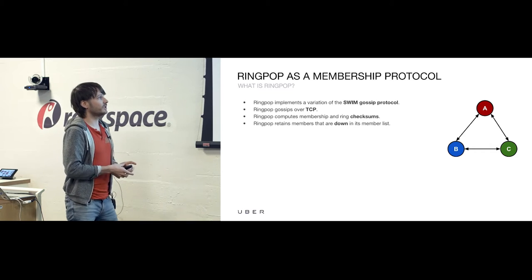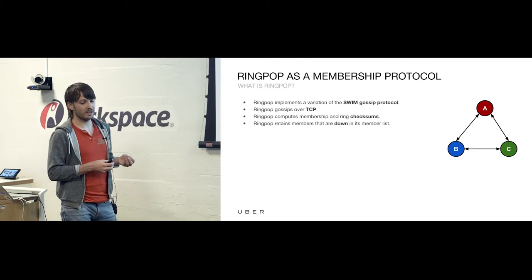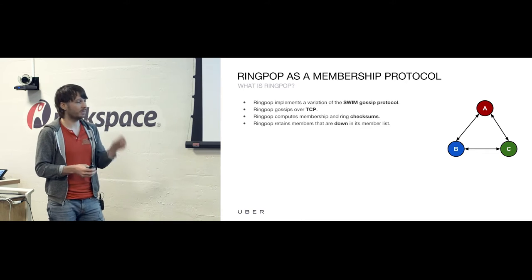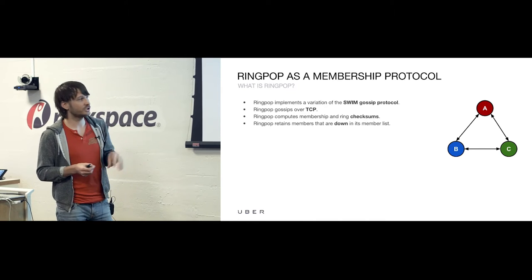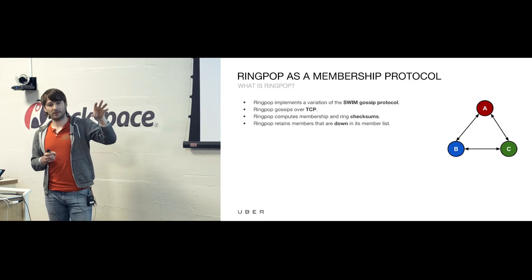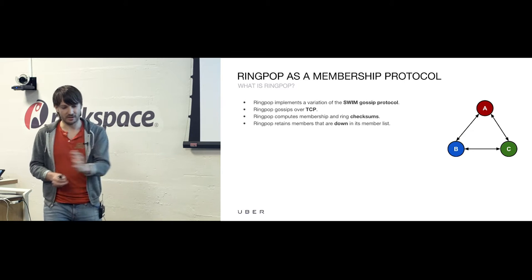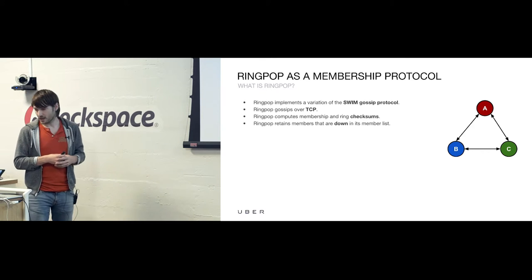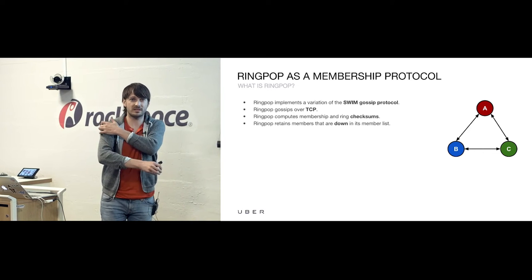If this were your application with three instances, they would have to find out about one another. The way they do that is by using the primitives of SWIM, which are ping and ping-req. A ping is exactly what it sounds like — members heartbeating but doing so in a random fashion. They choose a random member with every ping, eventually get to the full membership list, then rotate that list when they've reached a full round of pinging. So A is pinging B, B is pinging C, C to A, and so on. The pings are used as a mechanism for fault detection and dissemination of information.